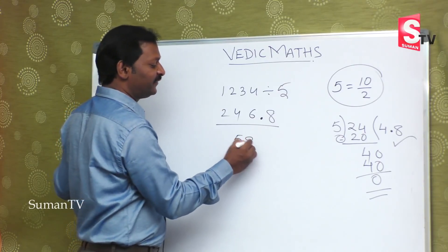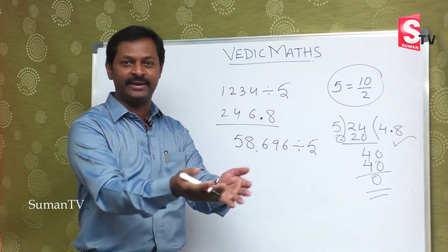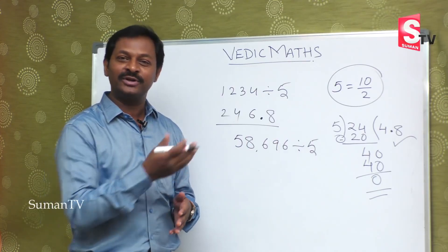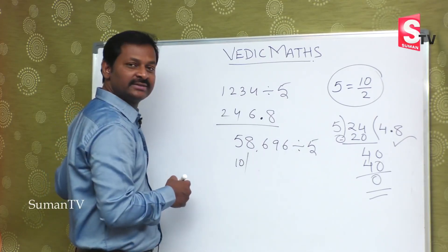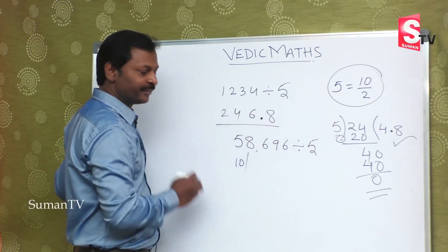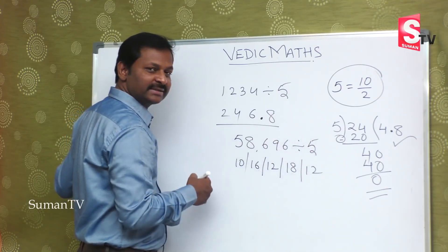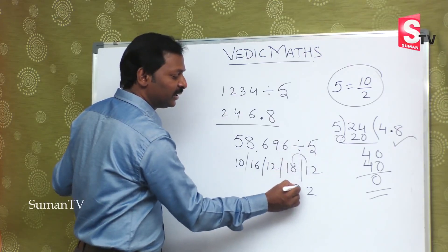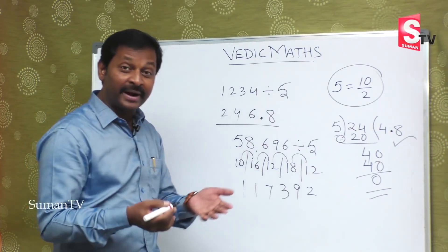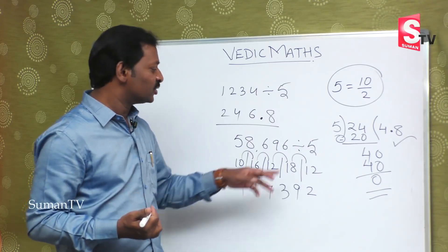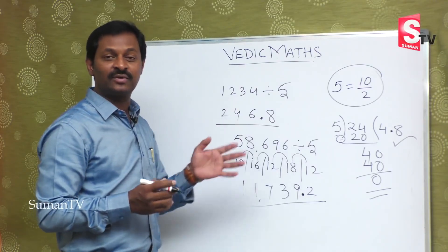Let me give you a bigger number: five hundred and fifty eight thousand six hundred and ninety six is divided by five. Simple logic — convert five to ten by two. So the division becomes multiplication: two by ten. Multiply each digit by two: five twos are ten — put a slash for double digit. Eight twos are sixteen. Six twos are twelve. Nine twos are eighteen. Six twos are twelve. Apply the balancing rule — two comes down, giving nine, three, seven, one, one. By ten means we put a decimal point. The answer is one hundred and eleven thousand seven hundred and thirty nine point two.